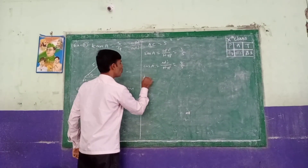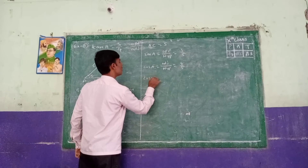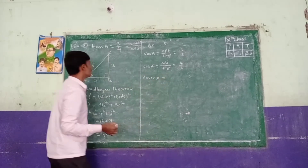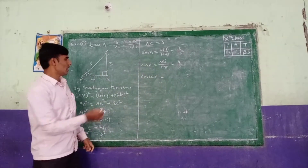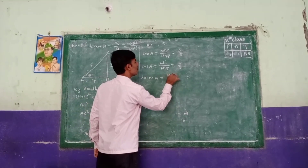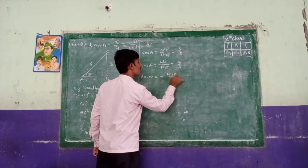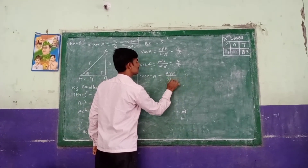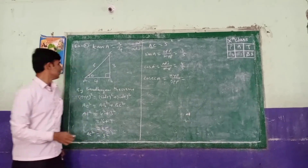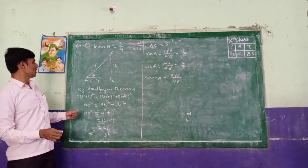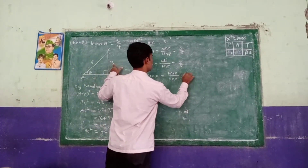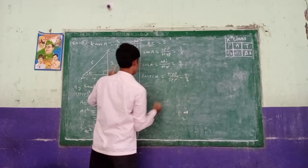Next, cosecant A equals hypotenuse by opposite side. Hypotenuse equals 5 and opposite side equals 3. So cosecant A equals 5 by 3.